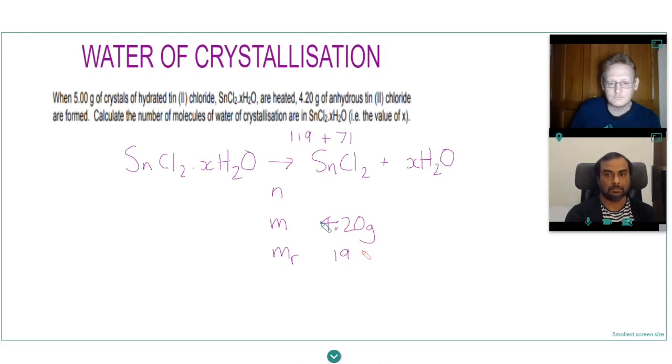And so what would be the moles here of the tin chloride? I've got my Classwiz there, the A-level calculator or the FX-991EX. So number of moles is actual mass over Mr, so that's 4.2 over 190.